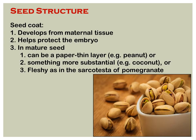The seed coat develops from the maternal tissue and, as mentioned, it helps protect the embryo because it is hard. A mature seed can have a papery layer — for example, peanut has a very fine thin layer — but sometimes it is more substantial, like coconut which is very hard. A third type is fleshy, as in the outer coat of pomegranate. So there are different types: maybe a thin layer, maybe more substantial, or maybe hard.